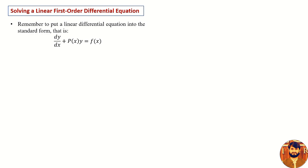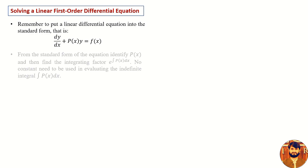The right side of the equation is the function of x alone. The second step is: from the standard form of the equation, identify P of x and then find the integrating factor, which is e raised to the power integral P of x dx.